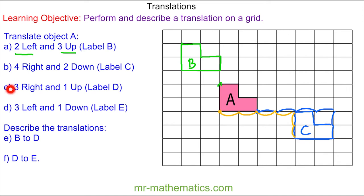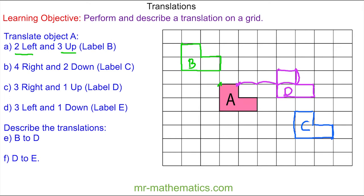Do you want to try and translate object A for questions C and D? You can pause the video and resume when you're ready. For question C, I'll pick a vertex and move it three to the right and one up, then redraw the image, which we'll label D. For question D, we'll move three to the left and one down, then redraw the object to create image E.